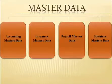Master data is classified into four sections. First one is accounting master data — the master data which belongs to the accounting section. Next is inventory master data, which is totally stock-oriented information. Next is payroll master data, which maintains details in the payroll section that cannot change frequently. Next is statutory master data, which includes statutory and law-related information.